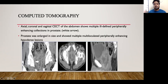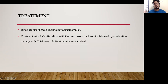Axial, coronal, and sagittal CT images of the abdomen showed multiple ill-defined peripherally enhancing collections in the prostate. The prostate was enlarged and showed multiple multi-loculated peripherally enhancing hypodense lesions. Blood culture grew Burkholderia pseudomallei. The patient was treated with IV ceftazidime and co-trimoxazole for two weeks, followed by eradication therapy with co-trimoxazole for six months.